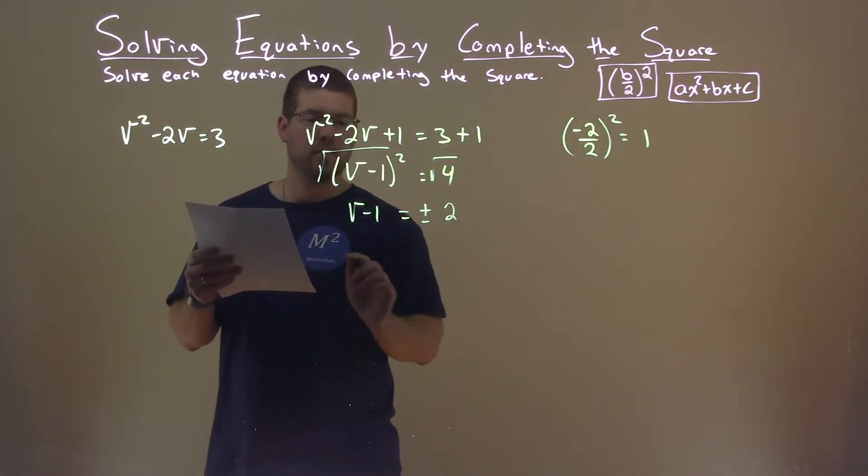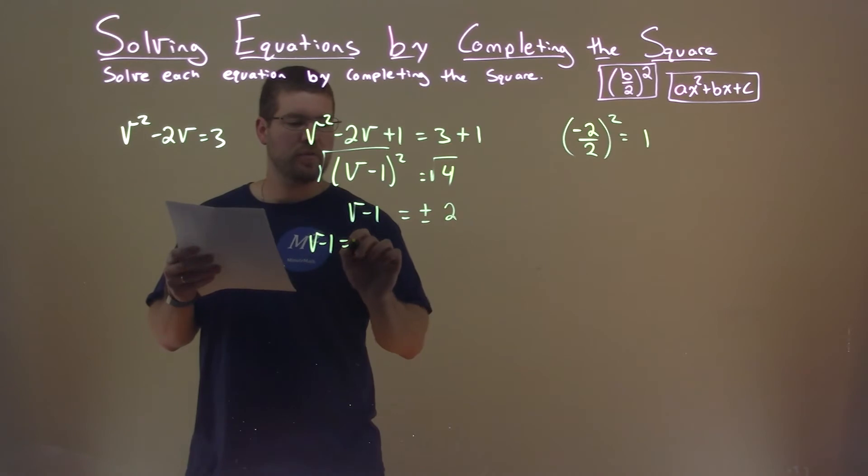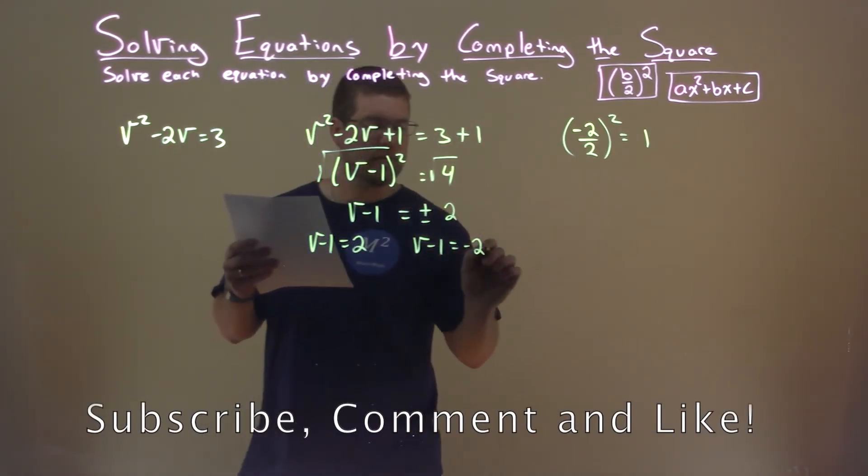Let's break this down into two equations, v minus 1 equals a positive 2, and v minus 1 equals a negative 2.